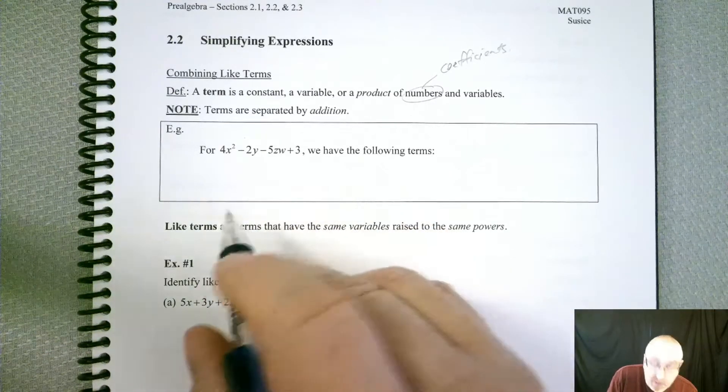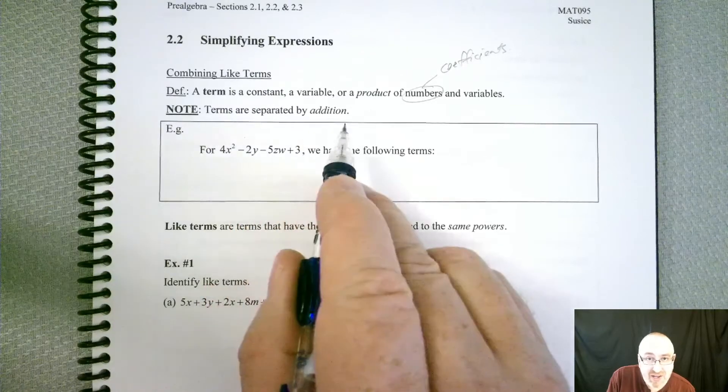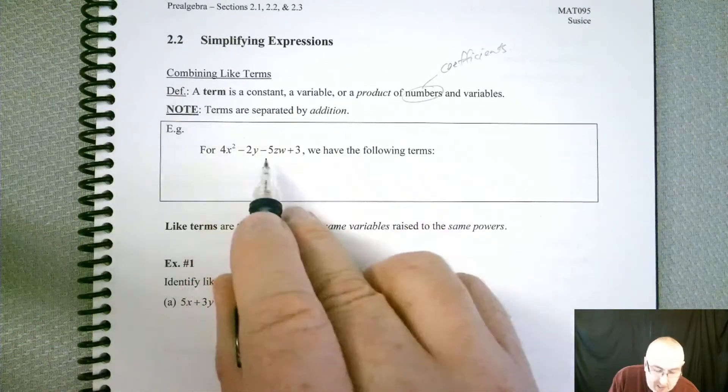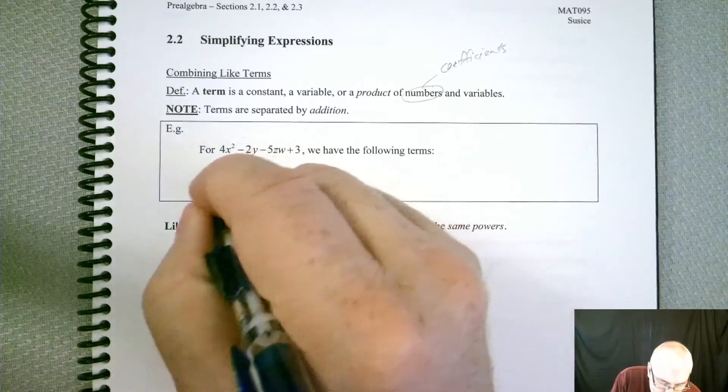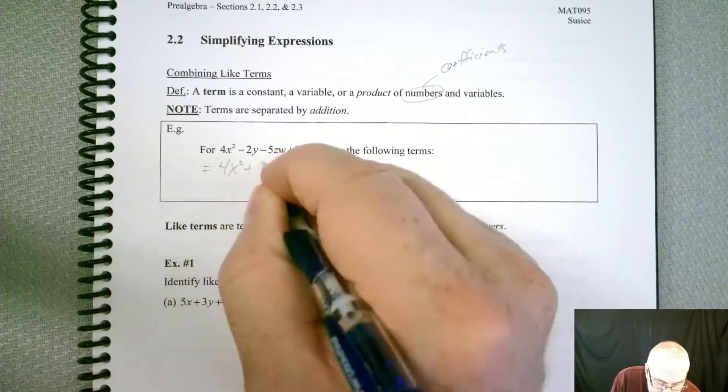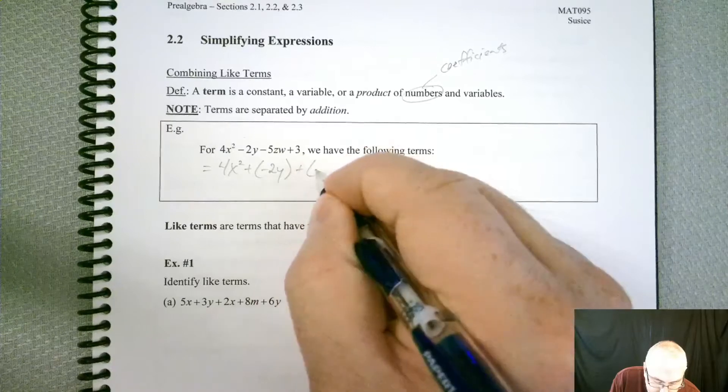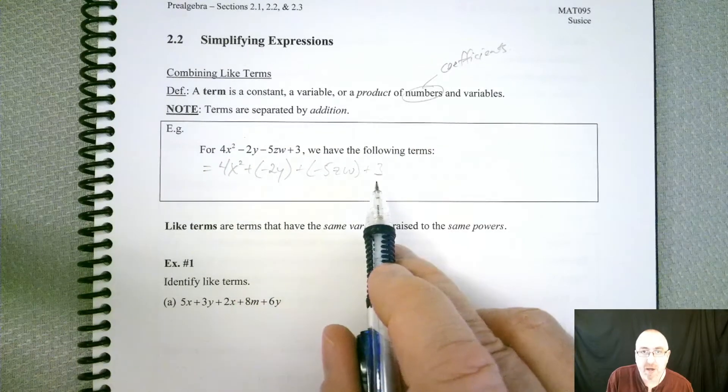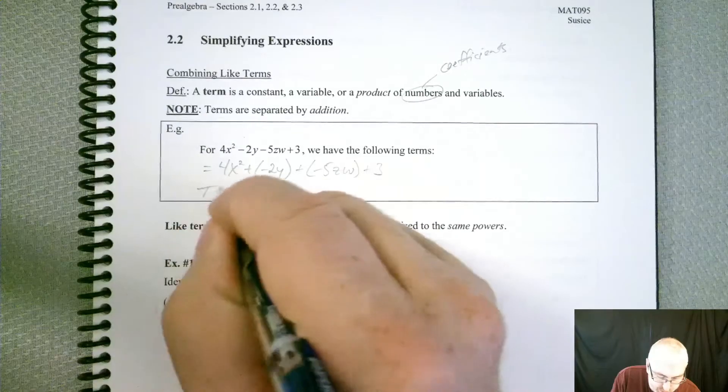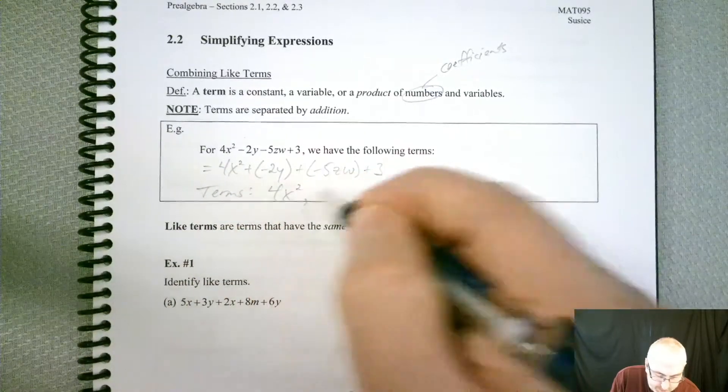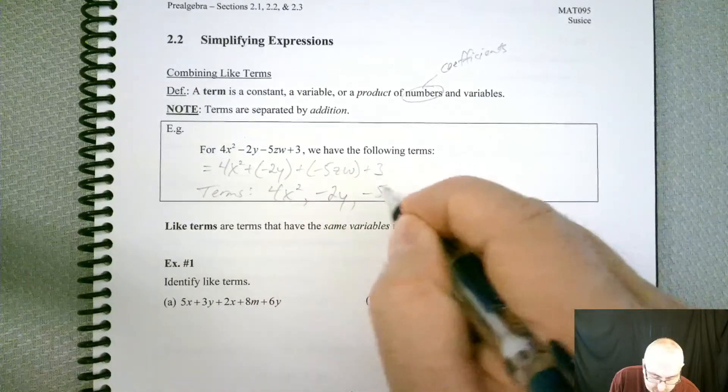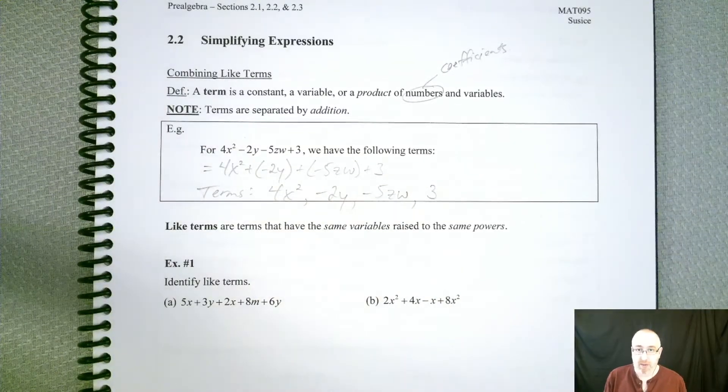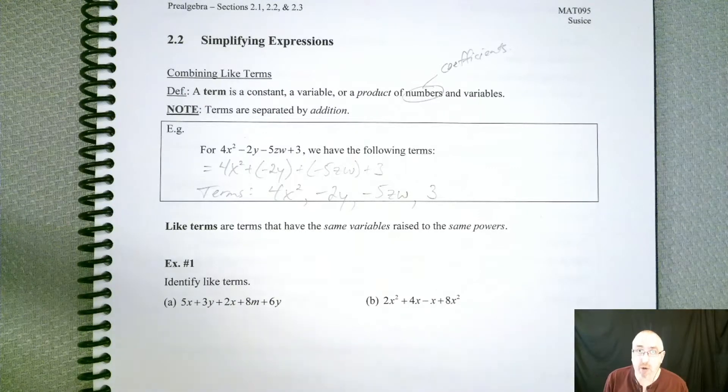There's 4 terms in this mix. And the reason why there's 4 is because I kind of cheated here a little bit. But it's addition or subtraction. But remember, we can write subtraction as addition. So everywhere there's a minus is also secretly an addition symbol. Because we could write it like this: 4x to the second plus a negative 2y plus a negative 5zw and then the plus 3. So now you can see all the plus signs in there. So we do have four terms.